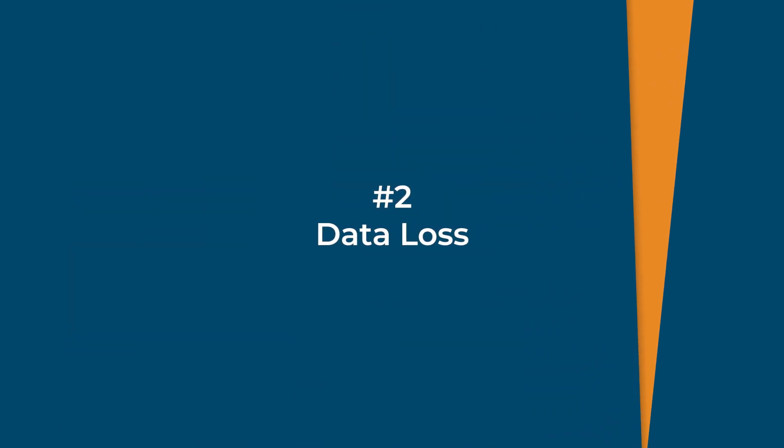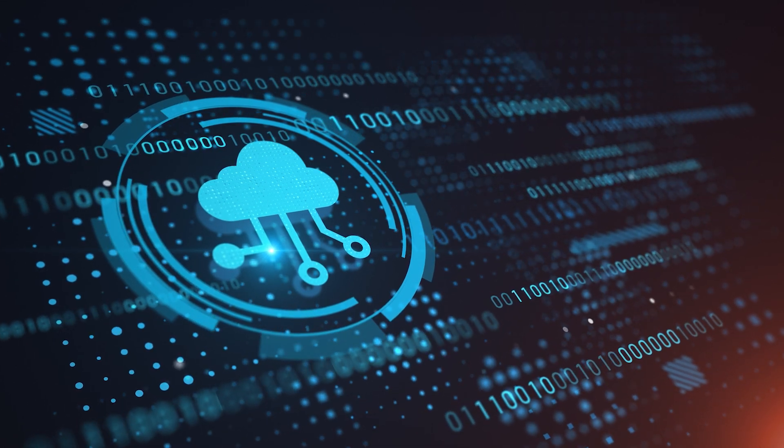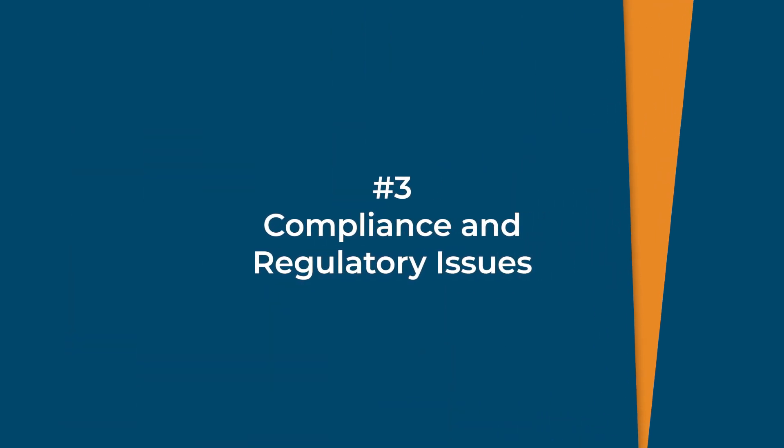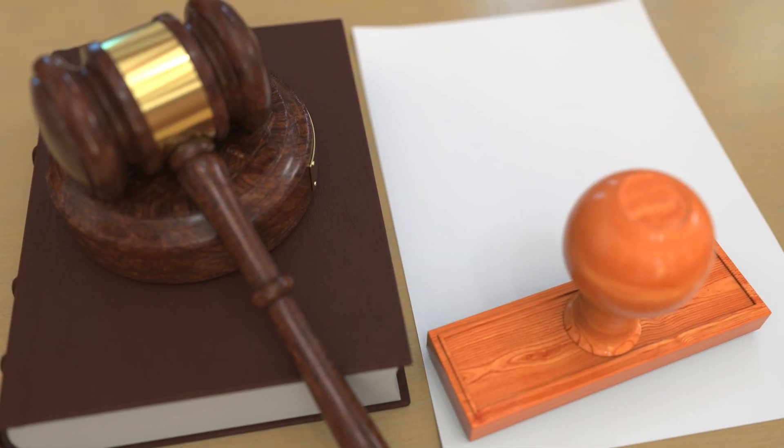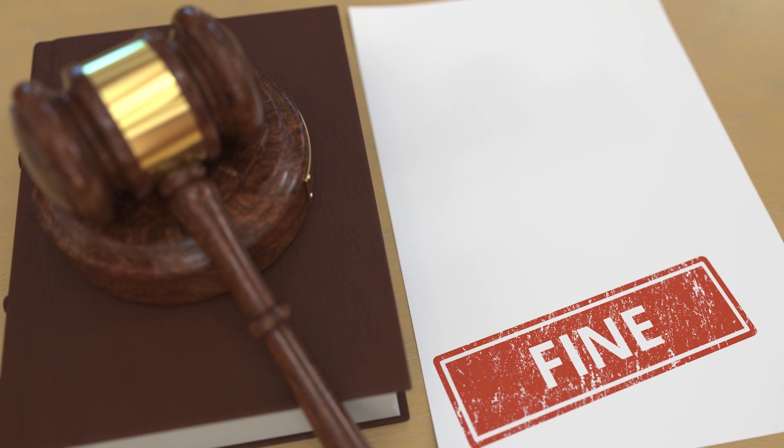Number two, data loss: when employees use unsanctioned cloud storage or file sharing services, data may not be adequately protected or backed up. This increases the risk of data loss due to system failures, accidental deletions, or security incidents. And three, compliance and regulatory issues: shadow IT can result in non-compliance with industry regulations and data protection laws. Failing to adhere to these standards can lead to severe penalties and legal consequences for your business.